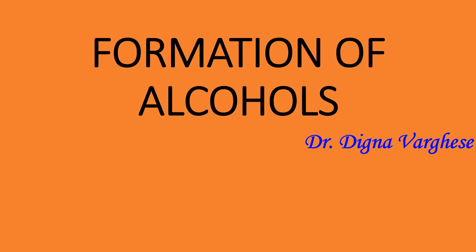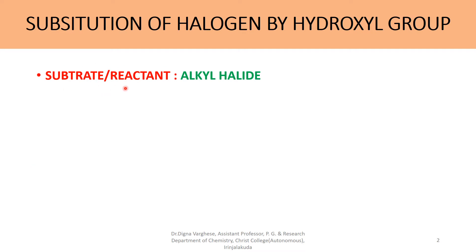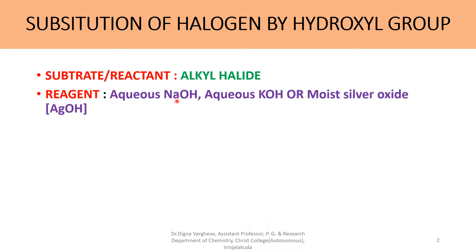Today's topic is formation of alcohols. The method is substitution of halogen by hydroxyl group. The substrate or reactant is alkyl halide, and the reagents are aqueous sodium hydroxide, aqueous potassium hydroxide, or moist silver oxide (AgOH).